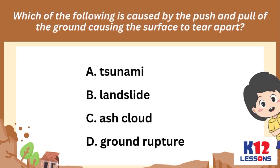Which of the following is caused by the push and pull of the ground causing the surface to tear apart? A. Tsunami, B. Landslide, C. Ash cloud, D. Ground rupture.